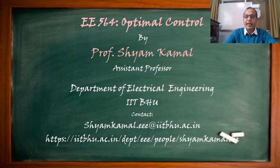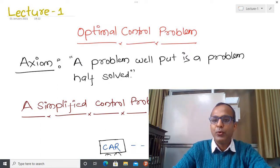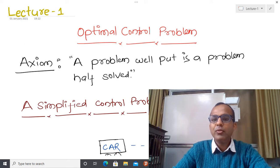Myself Syam Kamal, assistant professor in the Department of Electrical Engineering, IIT BHU. Today I am going to start the first class of optimal control. The course code is EE564, and in today's lecture we are going to see how one can formulate the optimal control problem.